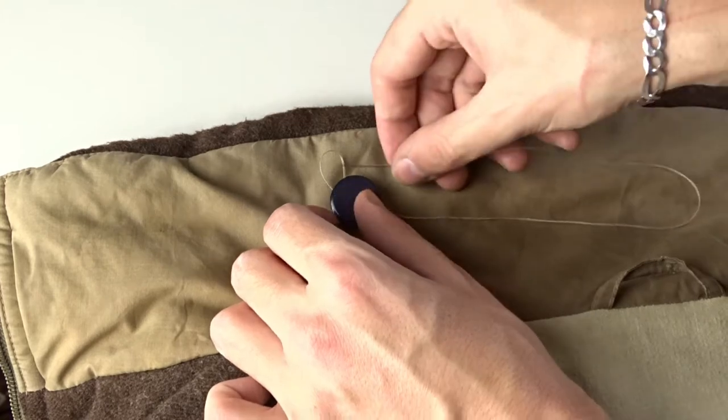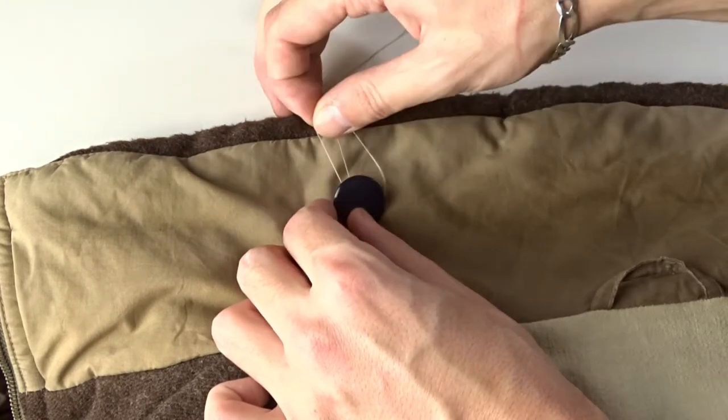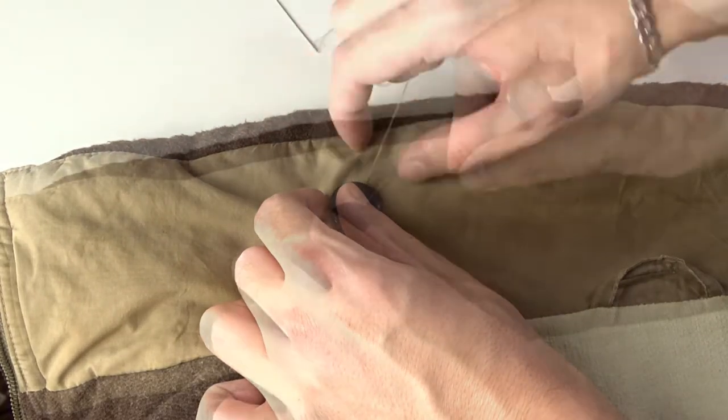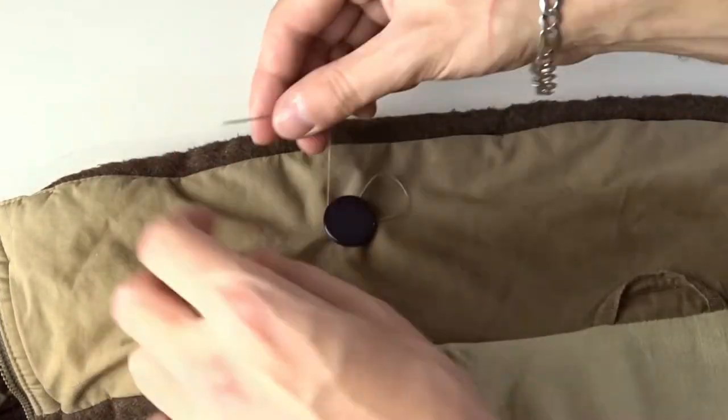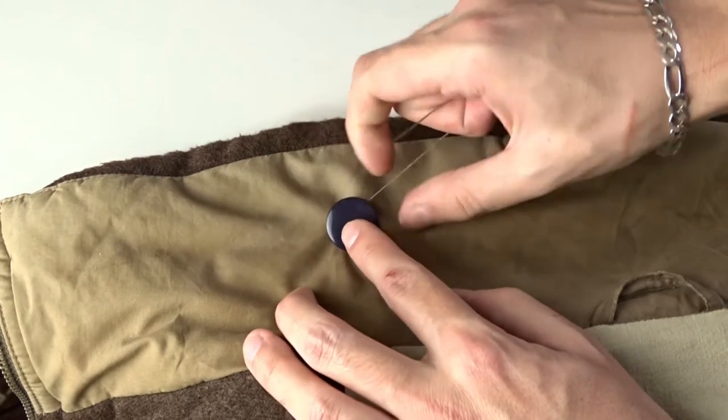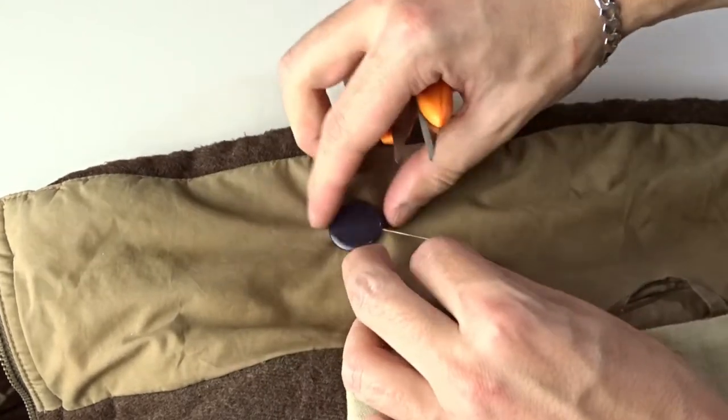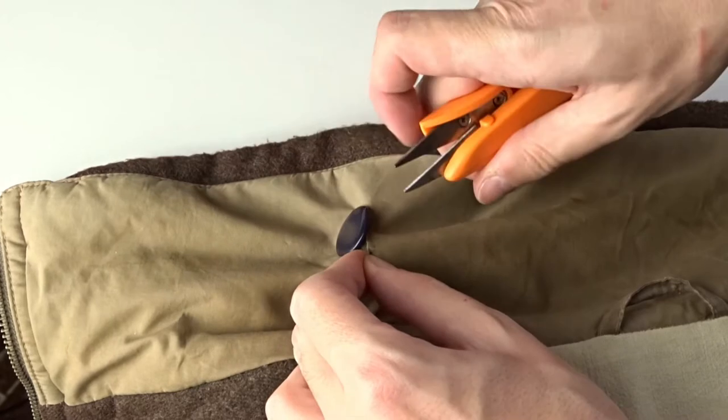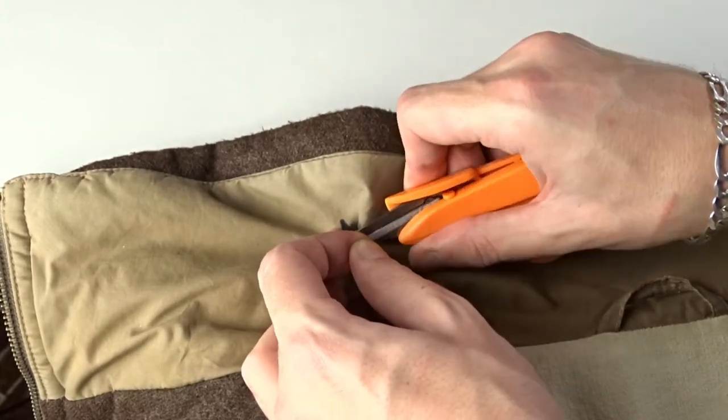Make a loop and pass the thread through it a few times to secure it. Then cut the thread and the button is sewn.